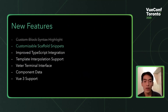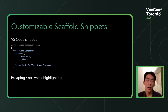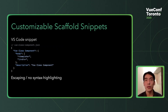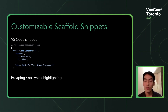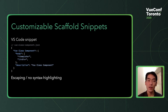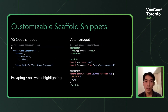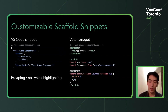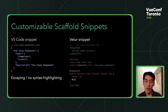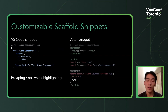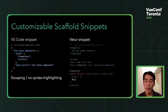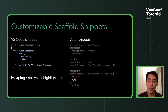Next is customizable scaffold snippets. It builds on top of VS Code's snippet system to offer something more useful to Vue.js developers. Because VS Code snippets require writing everything in JSON format, which isn't very readable. What I really want is to write my snippet as a Vue single file component and get the whole component back when I use it. So I combined the Vue single file component format with TextMate snippet syntax — where dollar-sign-one describes the first cursor stop when completing the snippet.